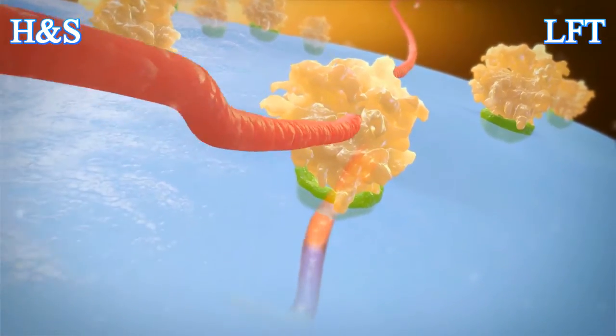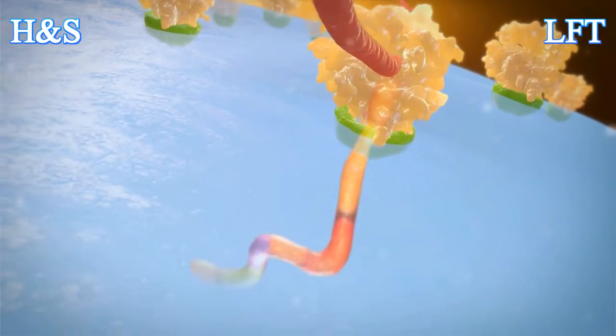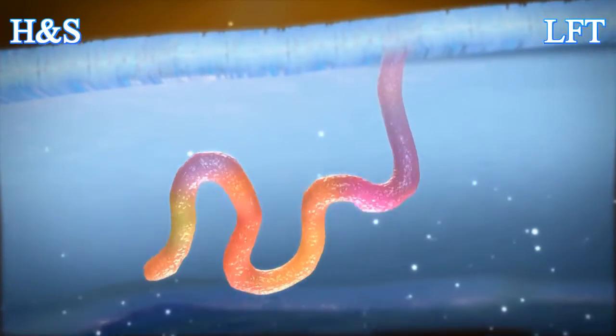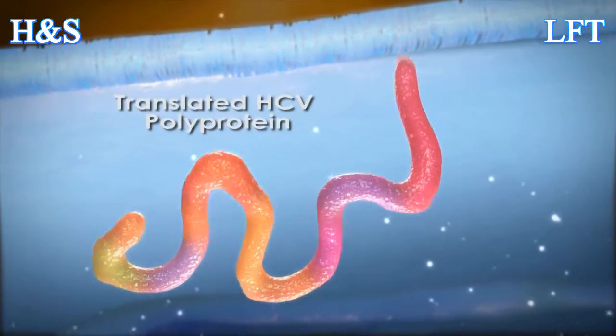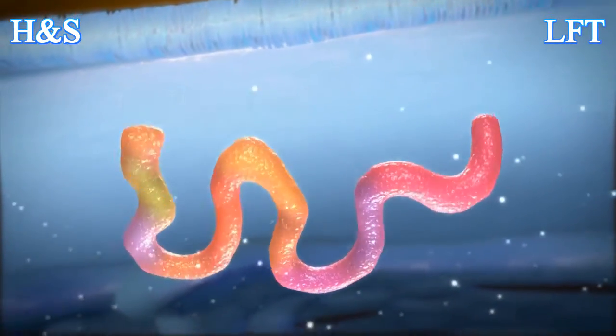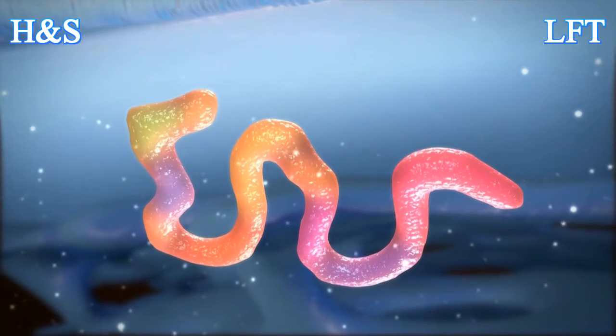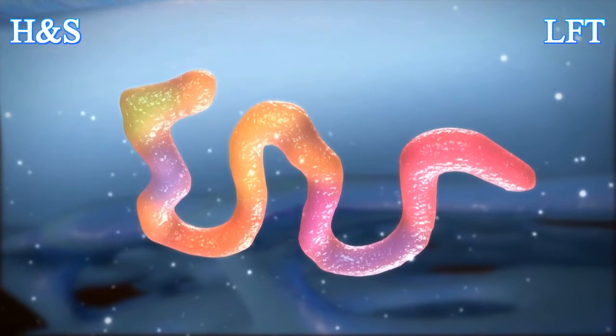These ribosomes then translate the genetic information to produce viral polyproteins over 3,000 amino acids long. These polyproteins are made up of three structural and seven non-structural proteins, a total of 10 distinct viral proteins.